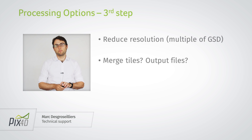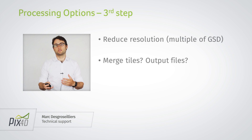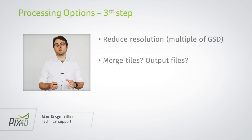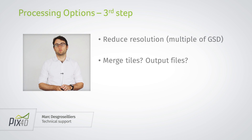For the third step, you can reduce the resolution of the ortho mosaic and the DSM to a multiple of the GSD. You can also review the different outputs and make sure that you're going to need each and every one of them. You can save a bit of time by not generating outputs that are not needed.